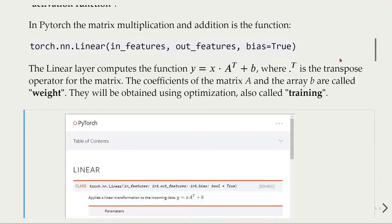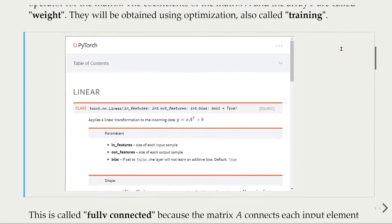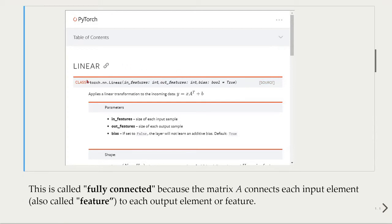You can take a look at this function in PyTorch, looking at the PyTorch documentation. We have here this linear function, and it applies a linear transformation to the incoming data Y equals X times A transpose plus B. Here we see the in_features, the out_features, and the bias. This is the size of each input sample, the size of each output sample, and bias can be set to false if we don't want to use bias, or it can be set to true, which is the default.